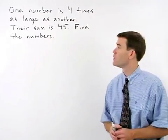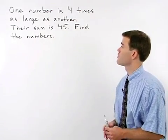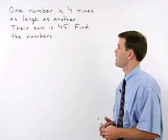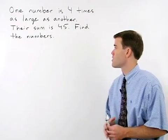Let's start by reading this problem through. One number is four times as large as another. Their sum is forty-five. Find the numbers.